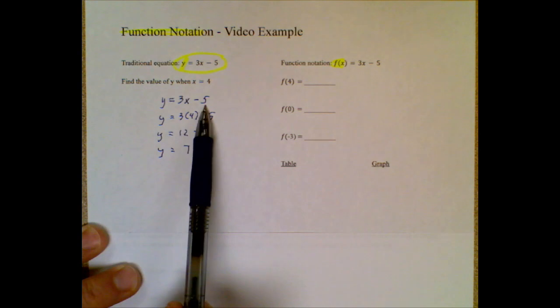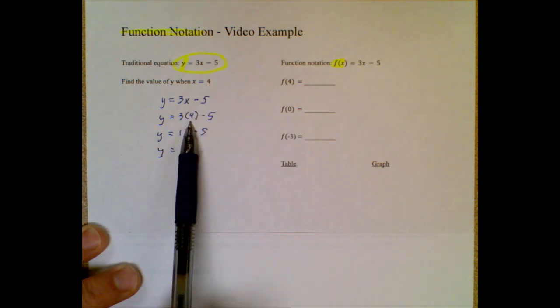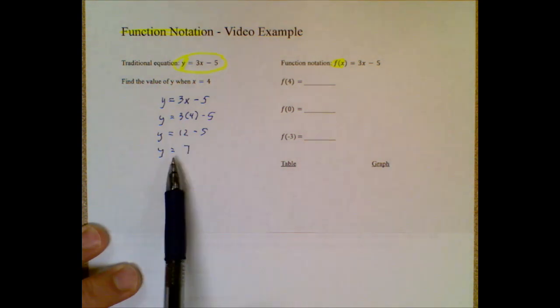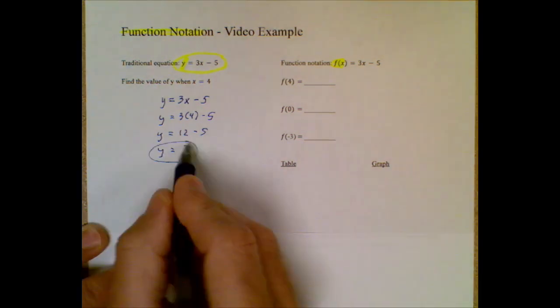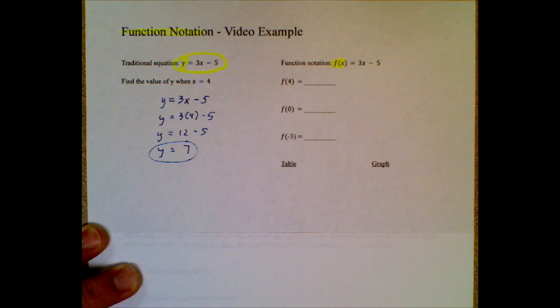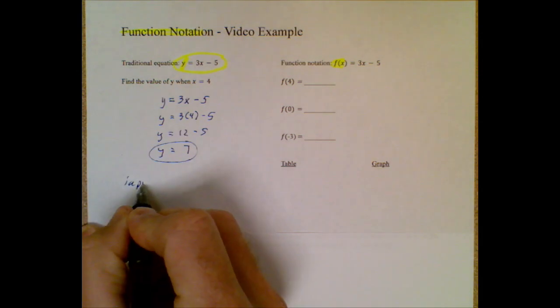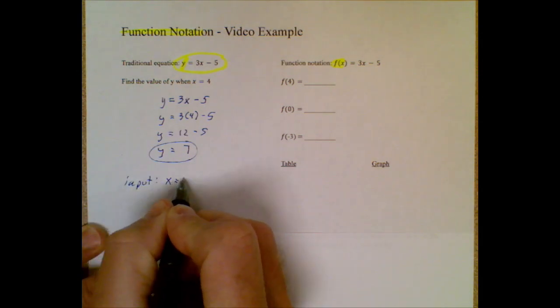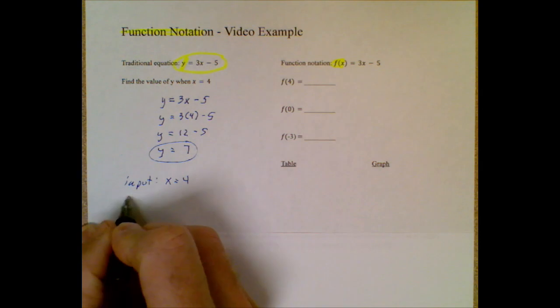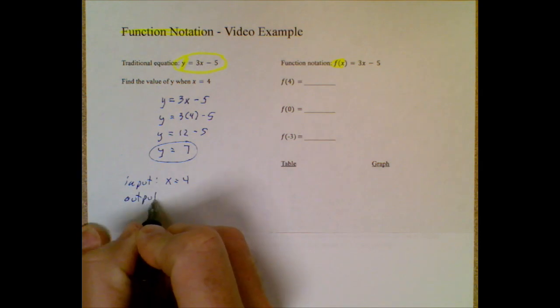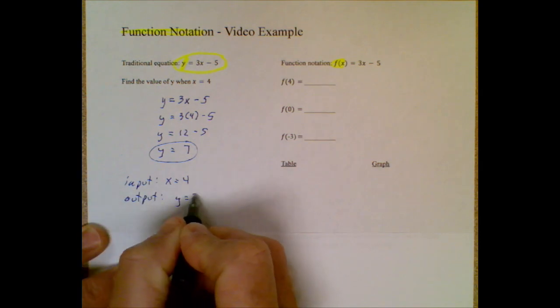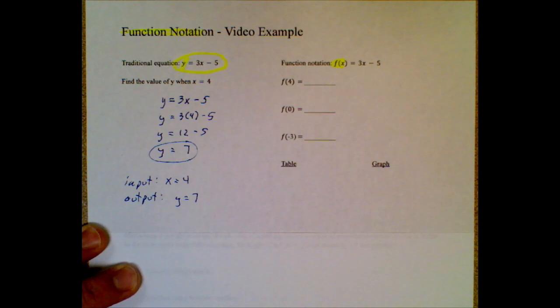I took the original equation and they said x equals 4, so I plugged in a 4 for x. Don't be jealous of how organized all my steps are. And eventually, I get out a y equals 7. So basically, I had an input or a plug-in of x equals 4, and at the end, I had an output or a result of y equals 7. I plugged in 4 to get out a 7.